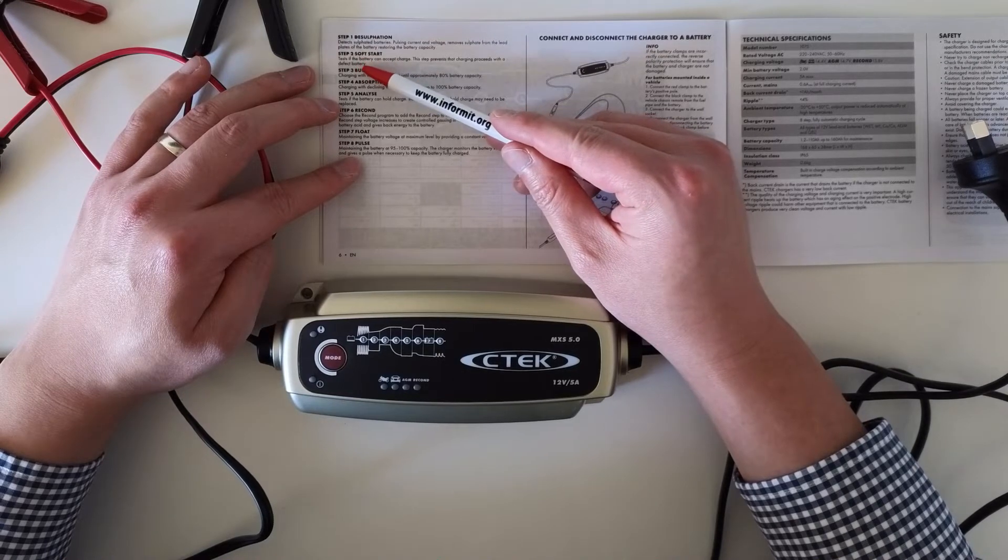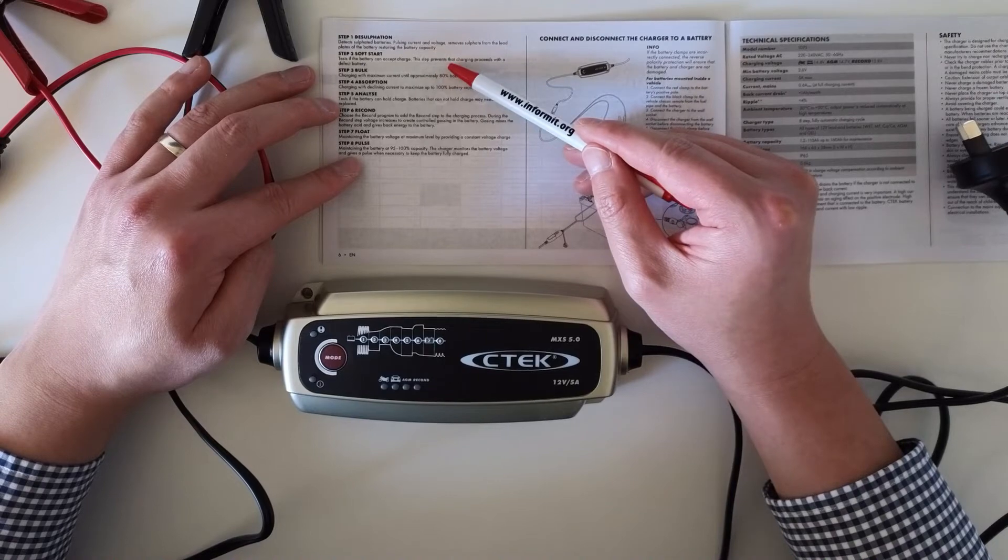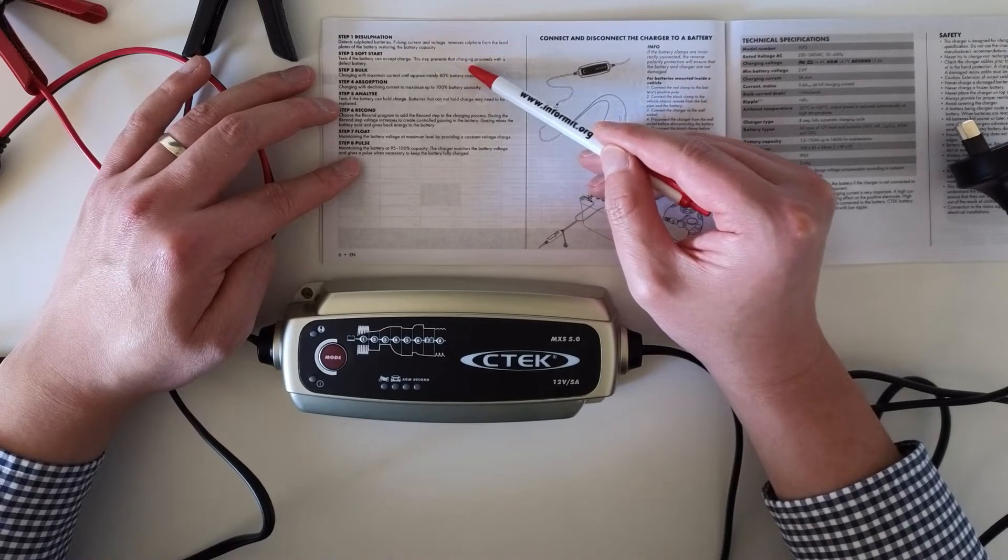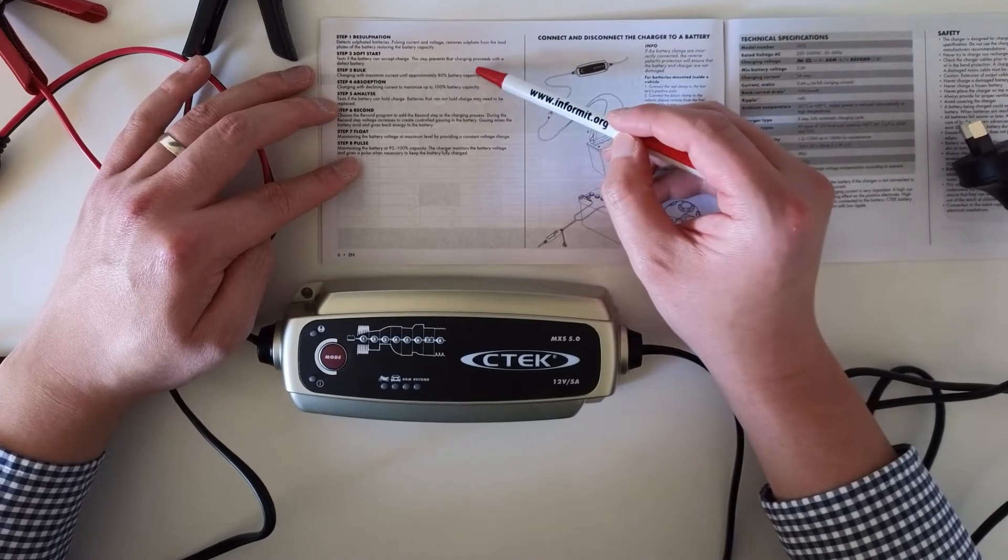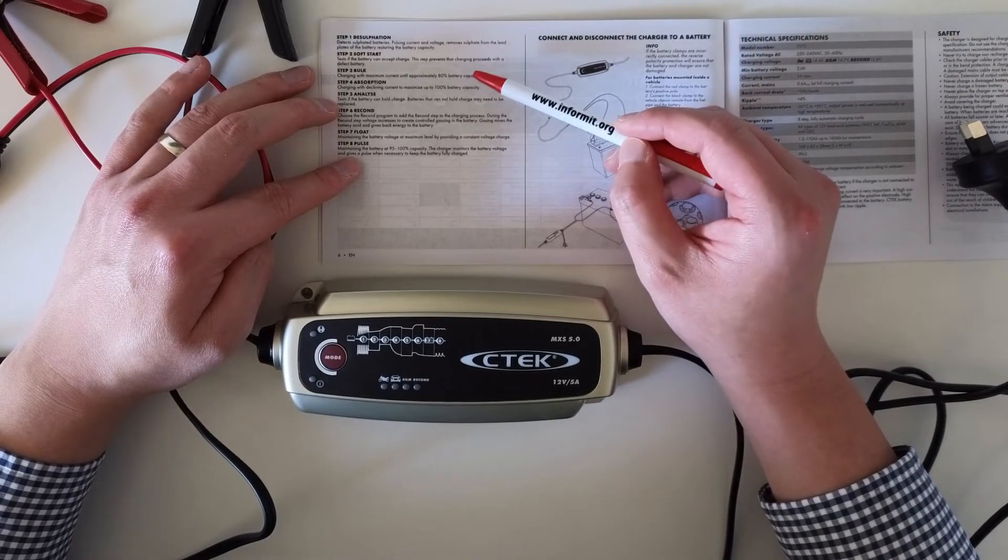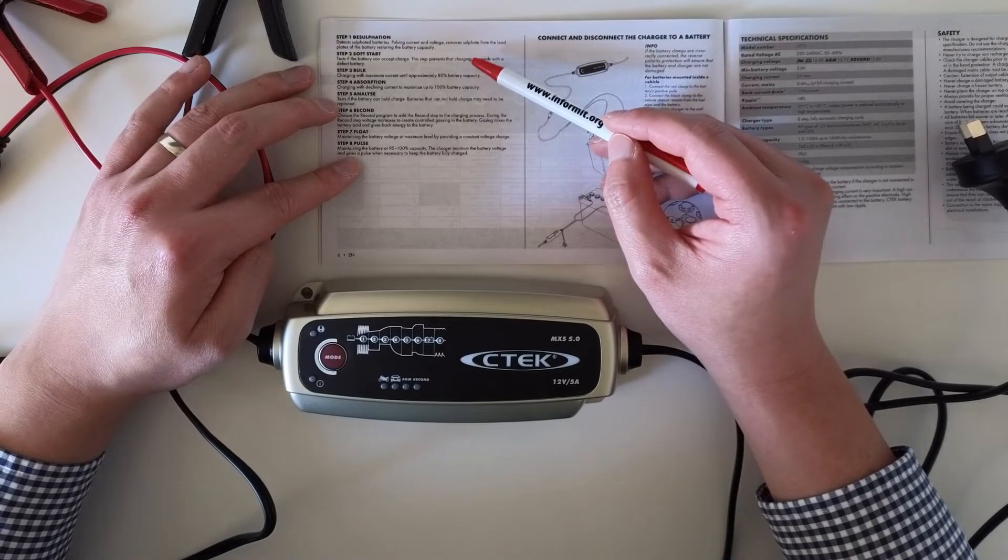The second step is it tests if the battery can accept charge. This step prevents charging from proceeding with a defective battery. So if the battery is defected, the charger will not start. In that case, this indicator will light up.